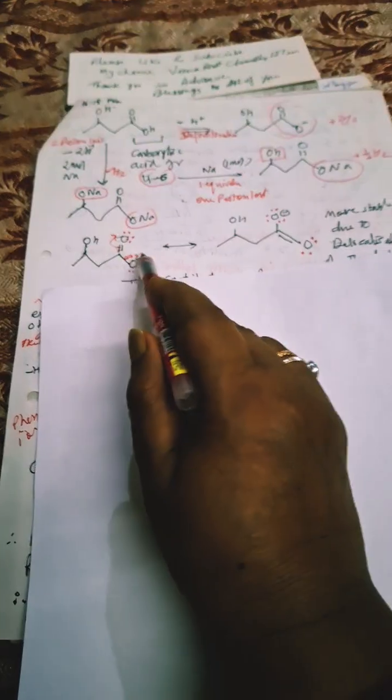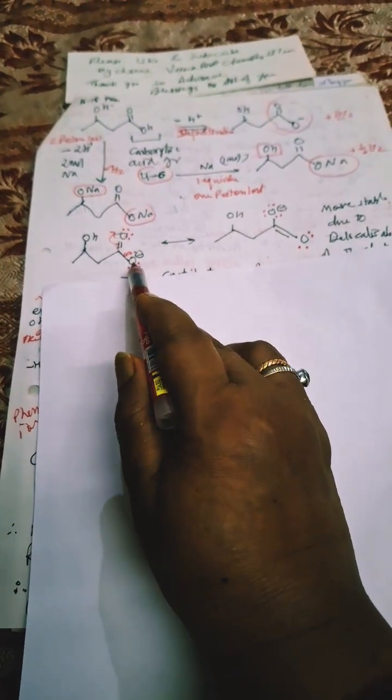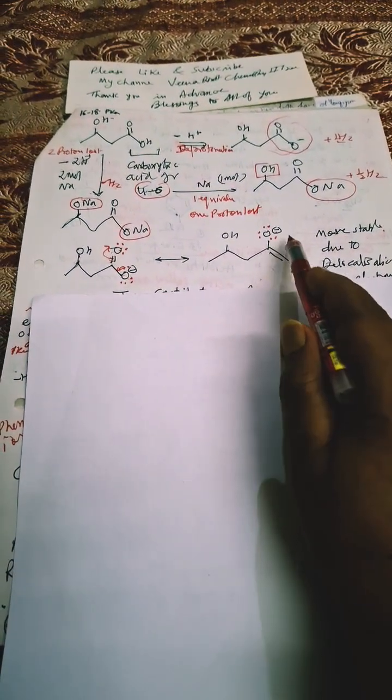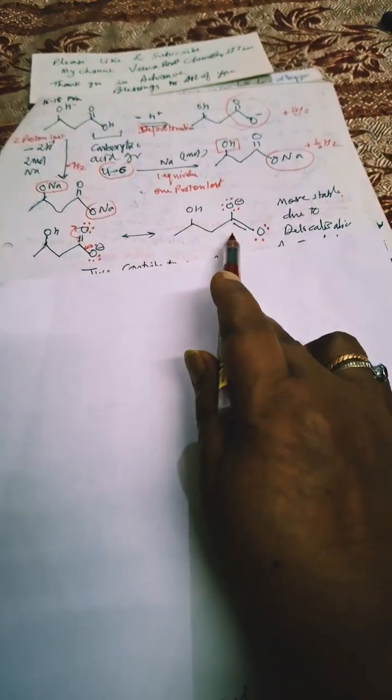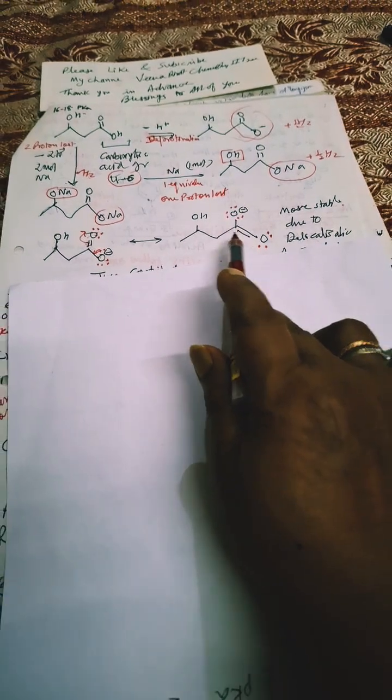Now this carbon-oxygen bond is having double bond here. Earlier this is having double bond, this is negative charge. Now this time this is having double bond, this is having negative charge. So there are two contributing structures.